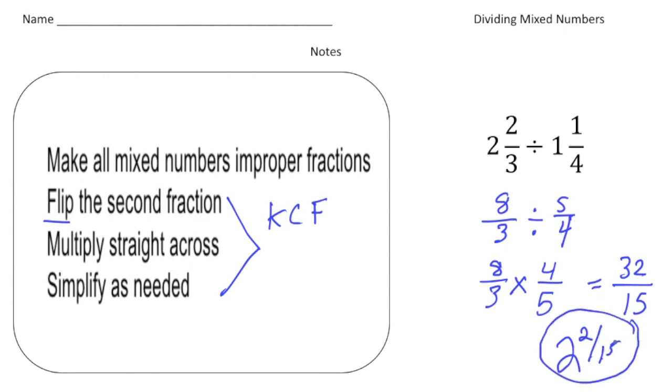Alright, so the process to divide mixed numbers is pretty simple. You first convert each mixed number into an improper fraction. And then you keep, change, and you flip. And then you solve.